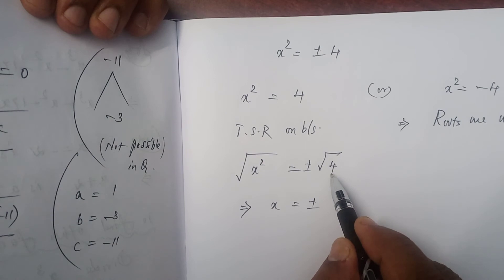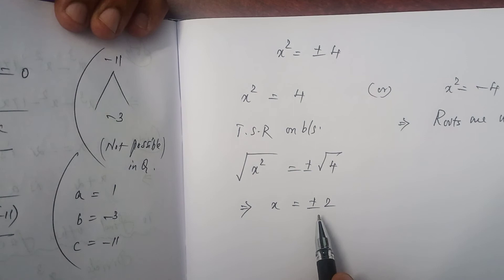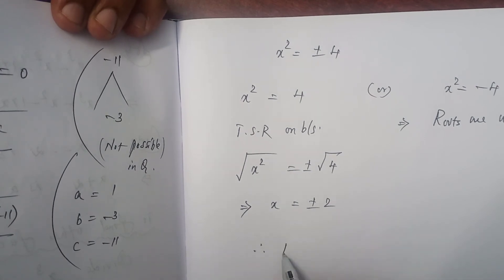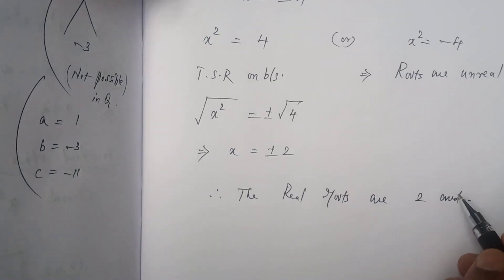4 is a perfect square number. Therefore, √4 = 2. Plus 2 and minus 2 are real numbers. Therefore, the real roots are +2 and -2.